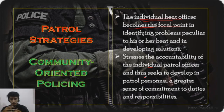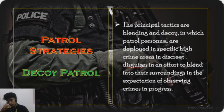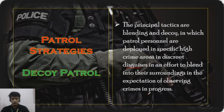That is being emphasized in community-oriented policing. Next, we have the so-called decoy patrol. It is a principal tactic of blending and decoy, in which patrol personnel are deployed in specific high-crime areas in discrete disguises — usually using unmarked vehicles — in an effort to blend into their surroundings in the expectation of observing crime in progress. The purpose of decoy patrol is more on criminal apprehension.